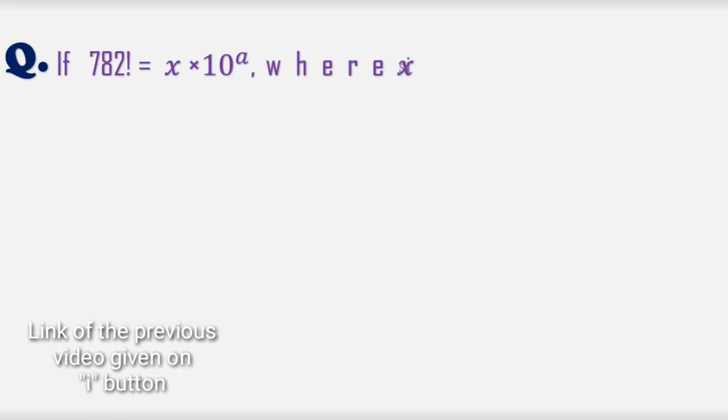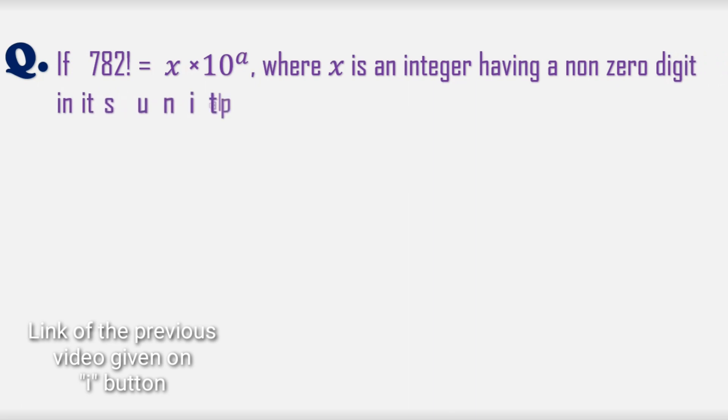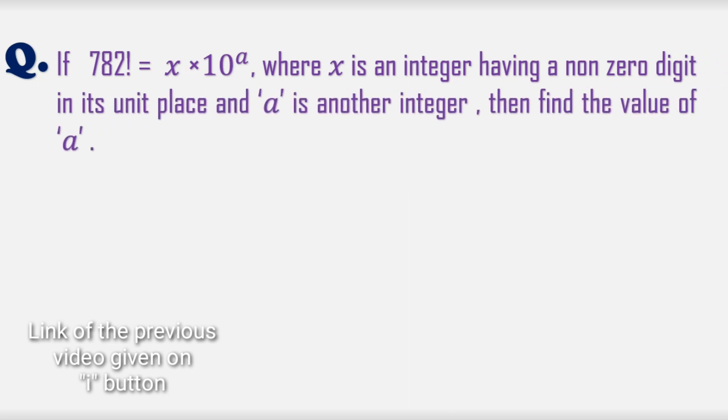Here is our previous question: If 782 factorial is equal to x multiplied by 10 to the power a, where x is an integer having a non-zero digit in its unit place and a is another integer, then find the value of a.